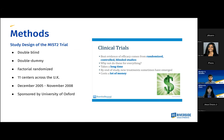Moving on to the methods. The second MIST trial was a double-blind, double-dummy, factorial randomized trial conducted at 11 centers across the United Kingdom from 2005 to November 2008, sponsored by the University of Oxford. This is a nice reference to the importance of clinical trials that are randomized, controlled, and blinded — they often take a long time and require a lot of financial support, but sometimes new treatments do emerge from randomized clinical trials.